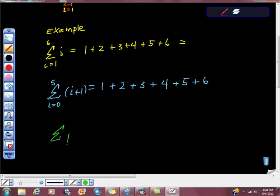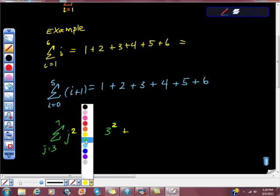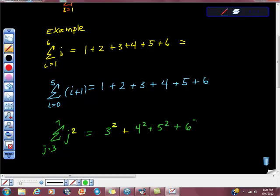Of j squared. So j is going to be our value. From j equals 3 to j equals 7. So from j equals 3 to 7. So we would get what? Right. We'd get 3 squared. Because it says here that what is happening to our function is it's being squared. And we're starting at 3. So 3 squared plus 4 squared plus 5 squared plus 6 squared plus 7 squared. And that's how we would do that.